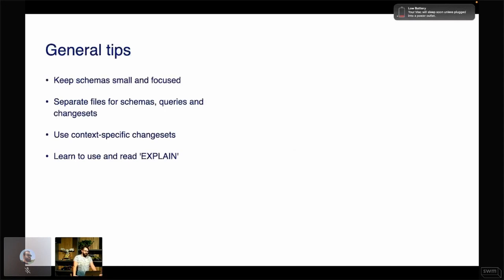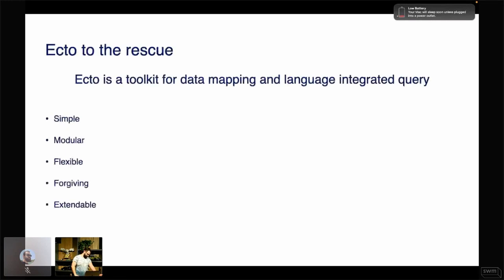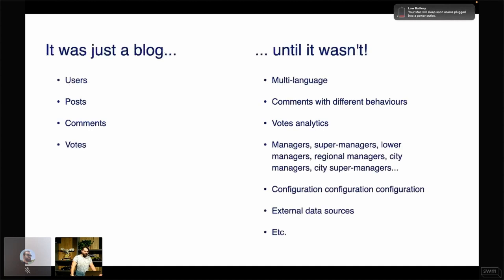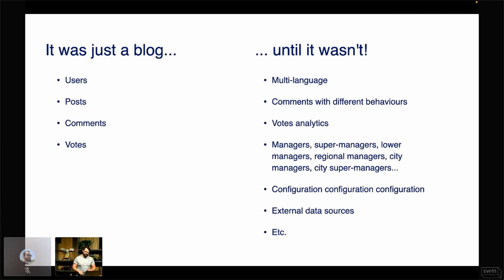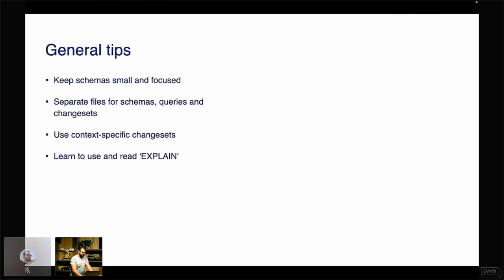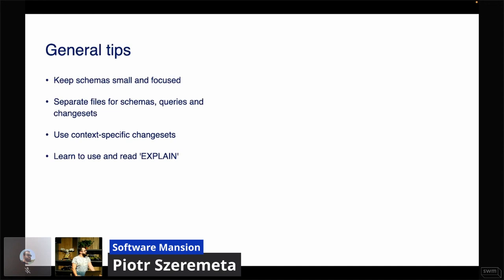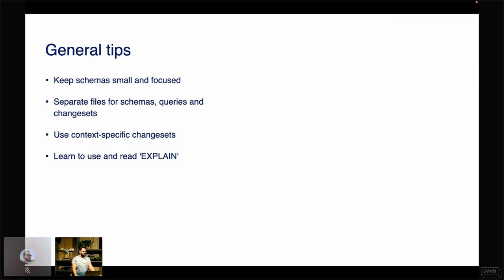Ecto can help us with that simply by allowing us to focus not on our underlying data structure — essentially tables and columns — but to define our own data structures that use that data. Instead of being driven by our schemas, we use them for our purposes. Over developing these applications, we came up with a couple of general tips that help us work with Ecto. The most general one is to keep things small and focused.